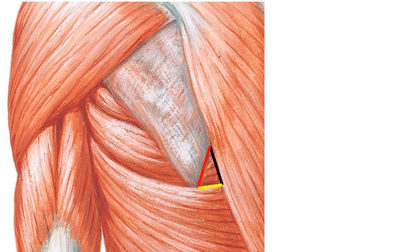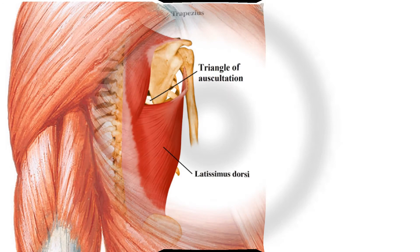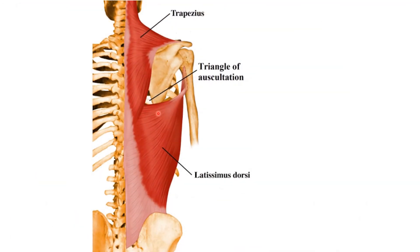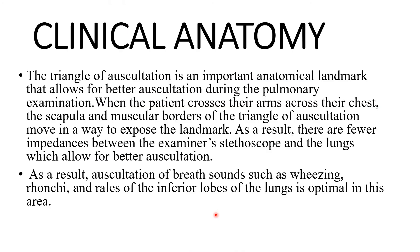What is the importance of this triangle of auscultation? The contents — on both sides you can identify the seventh rib is present in the triangle of auscultation at the right side and the left side. The seventh rib's outer surface gives origin to the serratus anterior muscle fibers, so serratus anterior muscle fibers are also present.